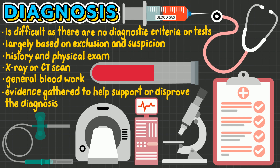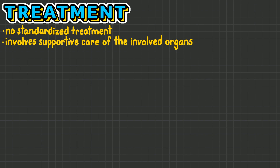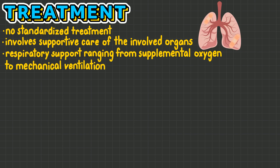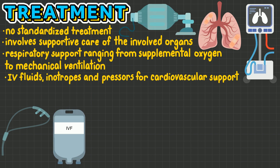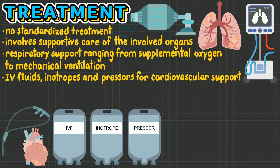There is no standardized treatment for fat embolism syndrome. Therefore, treatment involves supportive care of the involved organs. This includes respiratory support ranging from supplemental oxygen to mechanical ventilation, intravenous fluids, inotropes, and pressors for cardiovascular support.